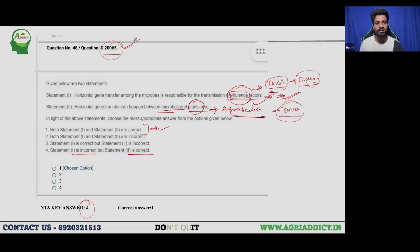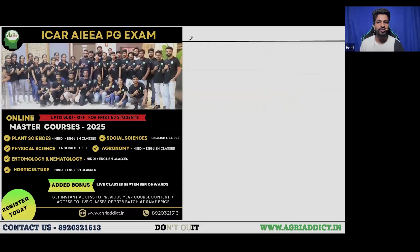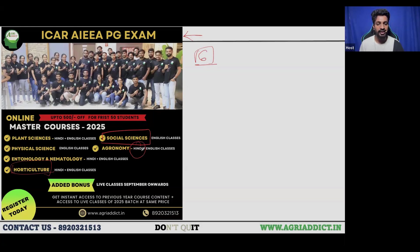Before moving to the next question, let me briefly mention our upcoming ICRPG courses. We have launched PG courses for six different subjects, with newly introduced courses in Soils, Social Science, and Horticulture — added after numerous student requests. We have also included Hindi language instruction for subjects like Plant Science, Entomology, Horticulture, and Agronomy, in addition to English.